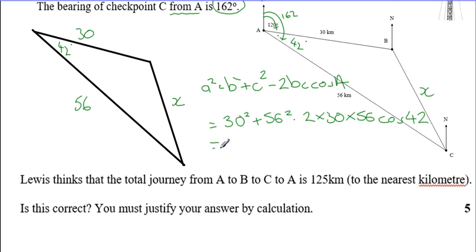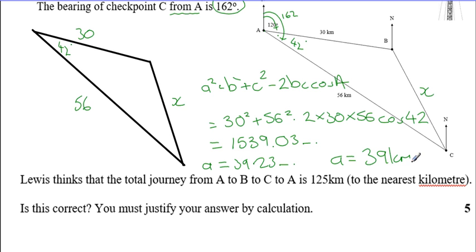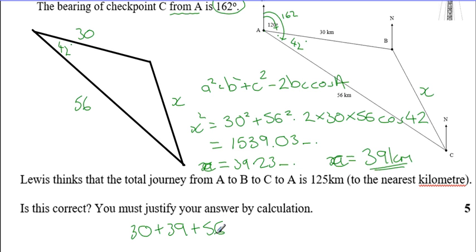A quick note — I initially pressed plus in the middle instead of minus, so if you got a different answer don't worry. The correct value of a² is 1,539.03 and a = 39 km. So the total journey is 30 + 39 + 56 = 125 km, therefore Lewis is correct.